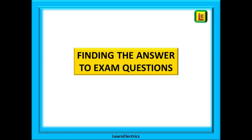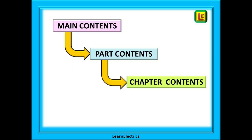Let's look at finding the answers to exam questions. You need to know that as well as the main contents page on page three, there are also contents pages for each of the individual parts, and many chapters also have a contents page of their own as well. There is lots of help in the book if we only know how to use it. So how do we access this information?